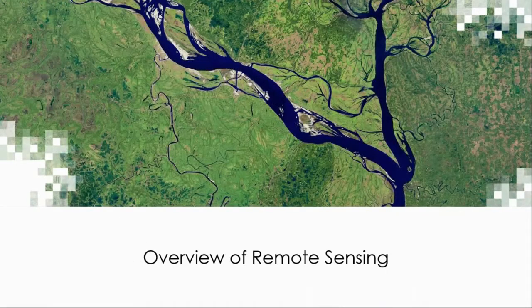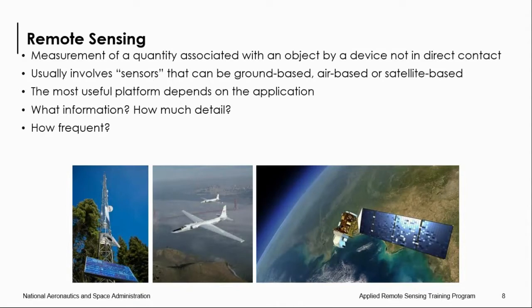Remote sensing is the science of obtaining information about objects or areas from a distance, typically from an aircraft or satellites, but it can also be from ground measurements. The process of acquiring data from aircraft or satellites involves the detection and measurement of radiation of different wavelengths reflected or emitted from distant objects or materials. Your application will help you decide which platform is most useful. Questions to consider include how much detail you need and how frequently you need this information.